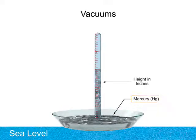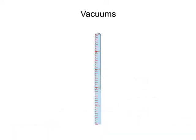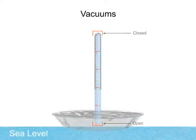Determination of this measurement is made with the use of a mercury barometer. Mercury barometers are made with a long tube, closed on the top end, open at the bottom, and immersed in a pool of mercury.